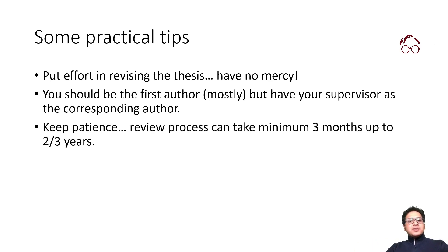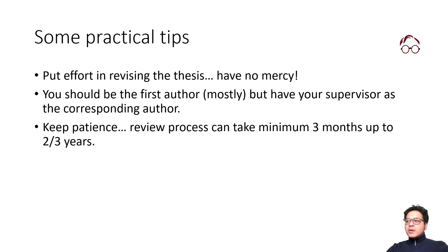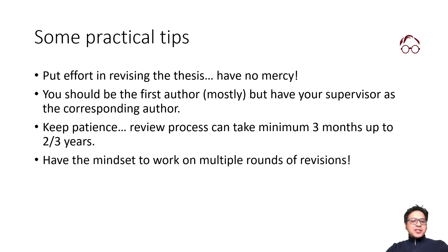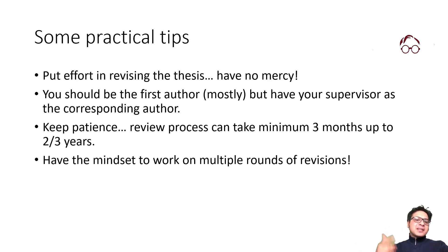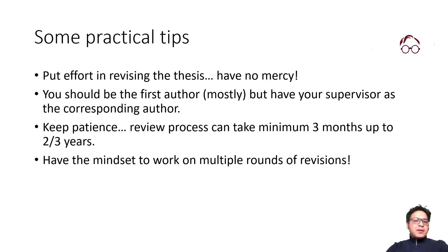When you submit the article, keep patience — the review process can take three months up to two or three years. We recently got a paper published that was under review for four years, and it was a good experience: the paper improved a lot and it ended up in a good journal. Also have the mindset to work on multiple rounds of revision. Even if you're working on something else, revisions will come back to you, but they often only take about one week of work and should be manageable even if you're working full-time.